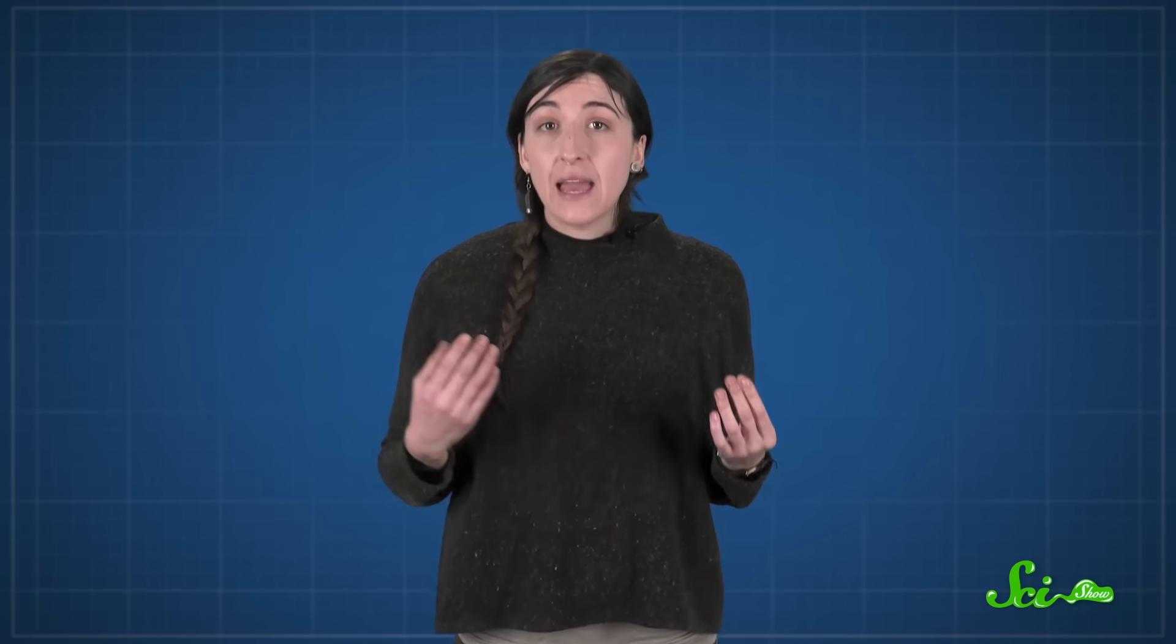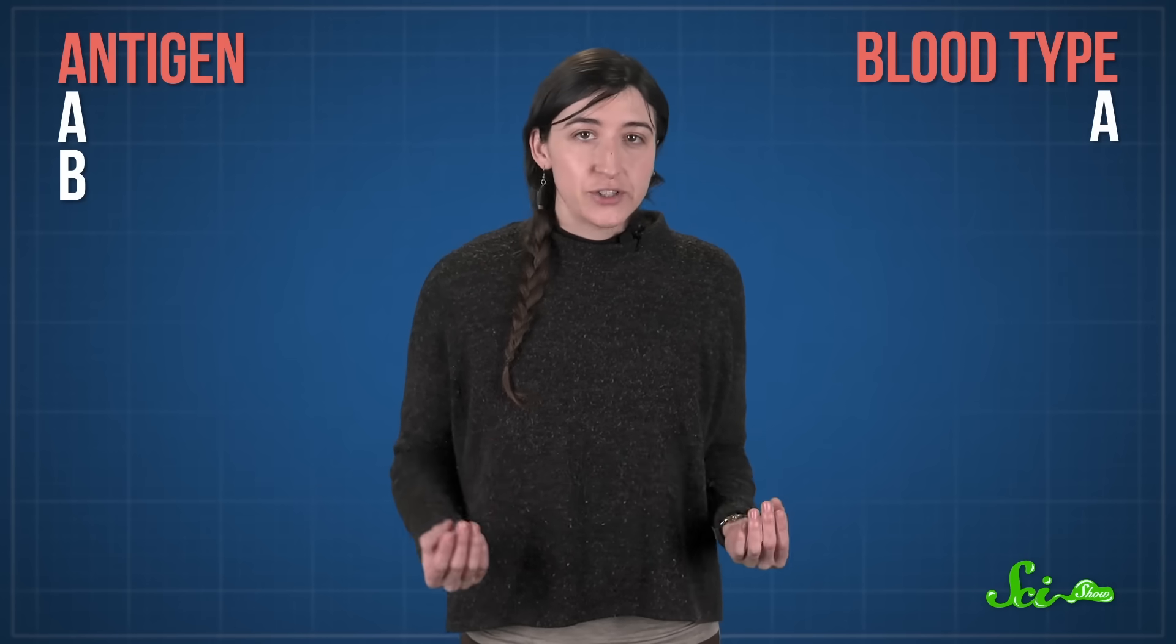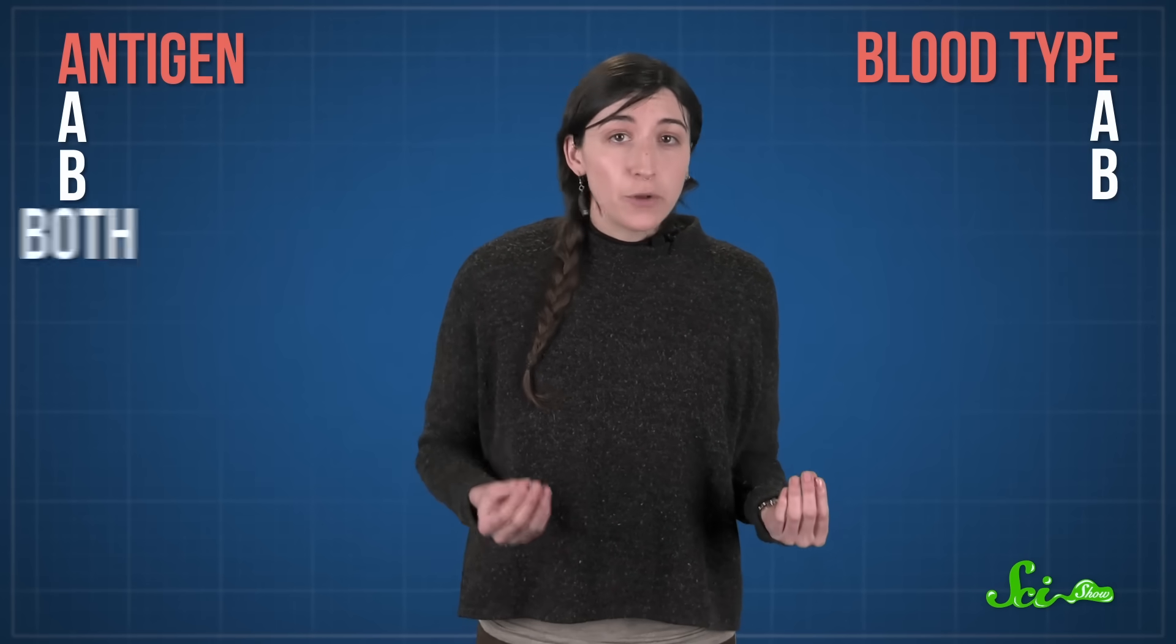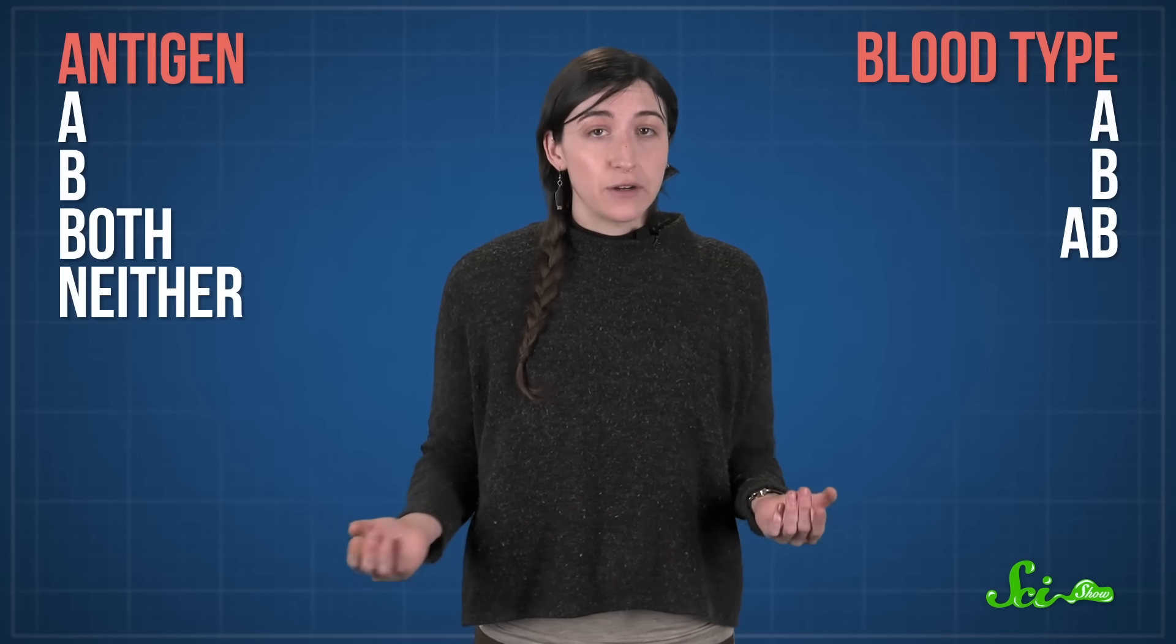The blood type you have is a result of a specific kind of antigen, in this case a type of sugar on the surface of your red blood cells. If you have the A antigen, you're type A, and if you have the B antigen, you're type B. If you have both, you're AB, and if you have neither, you're O.